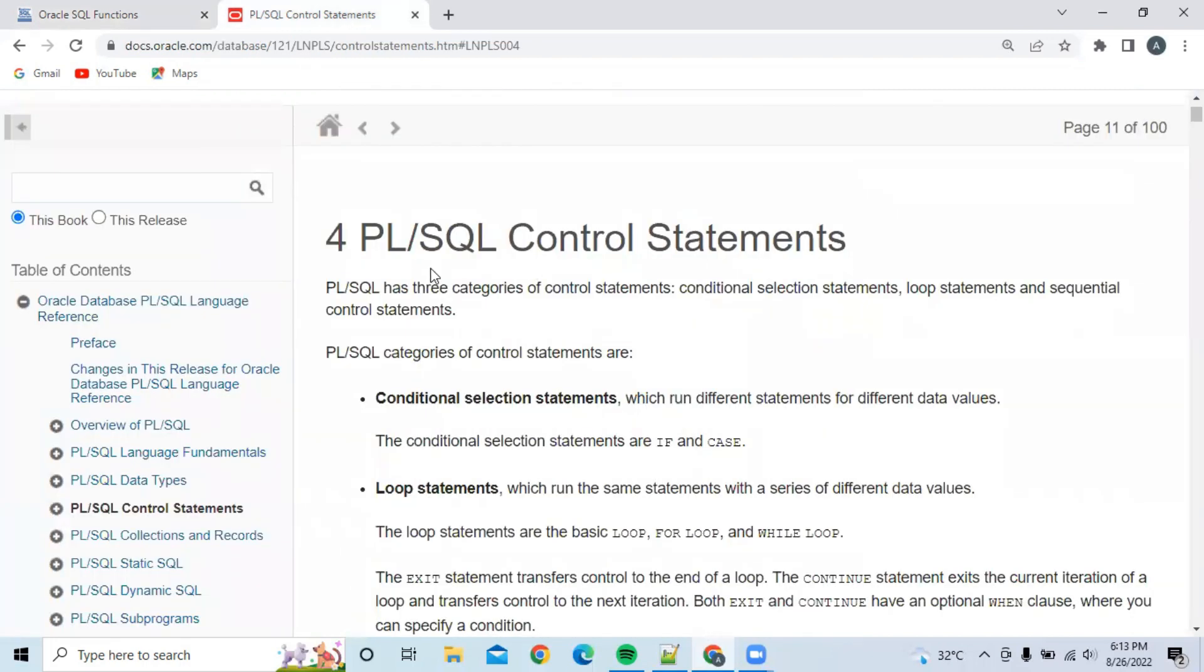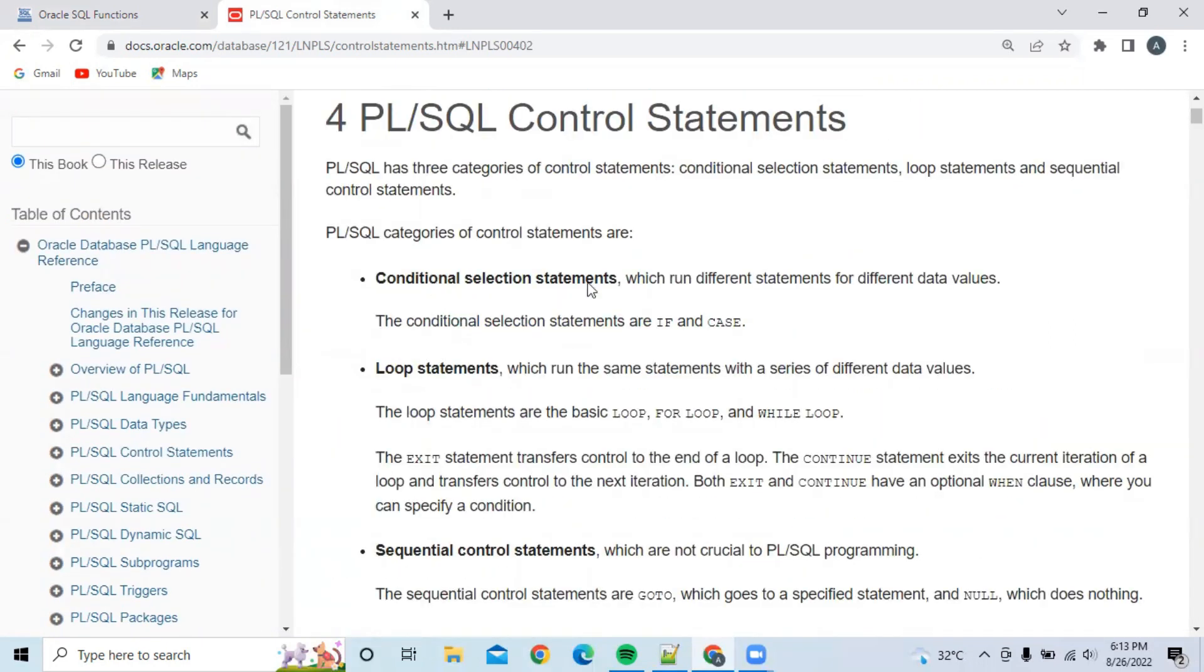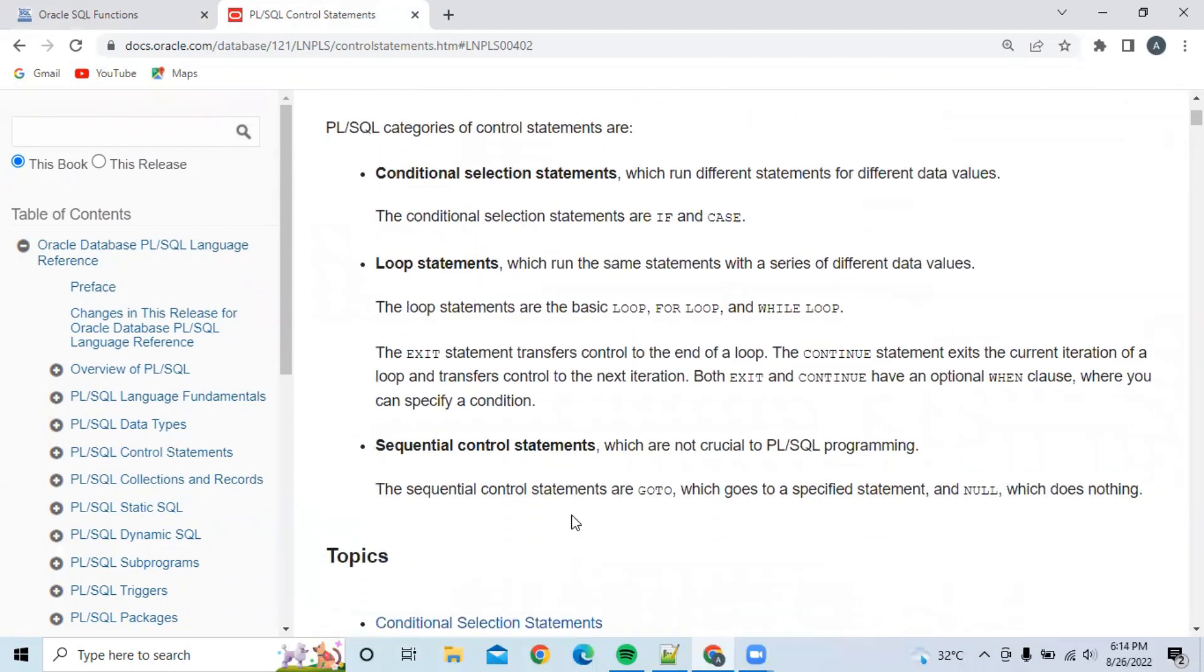Our next topic is control statements. You have different control statements like conditional selection statements, loop statements, and sequential statements. Inside conditional selection statements, we have IF and CASE. In loop statements, we have LOOP, FOR loop, and WHILE loop. Inside sequential control statements, we have GOTO and NULL.